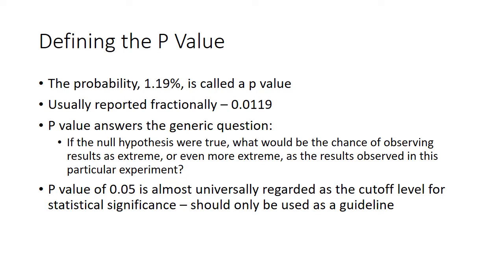In the medical literature, we set our value of significance at less than 0.05. A p-value of less than 0.05 is going to be considered the cutoff level. In this case, because our p-value for getting 16 heads out of 20 is 1.19% — and 0.05 is another way of writing 5% — this would be considered to be statistically significant.